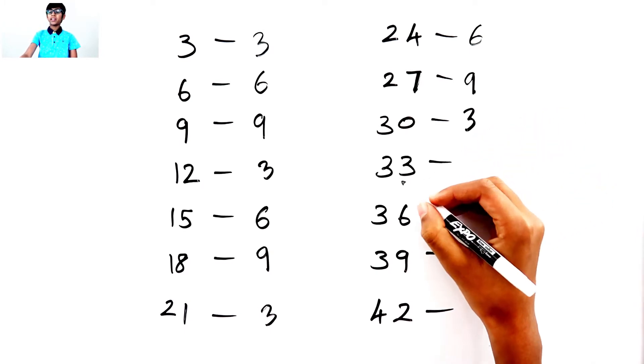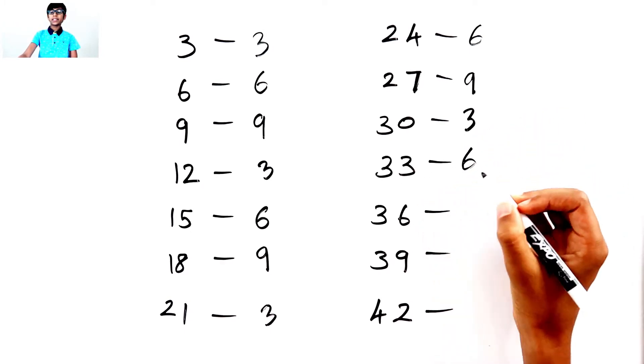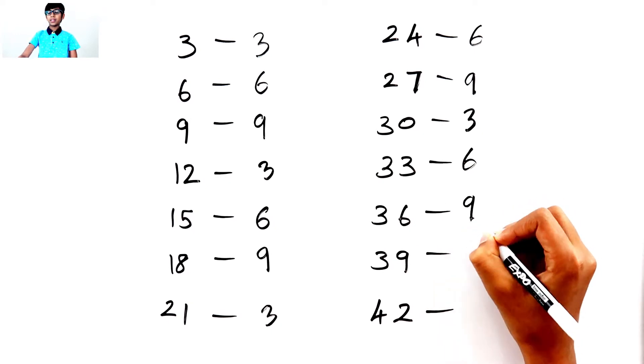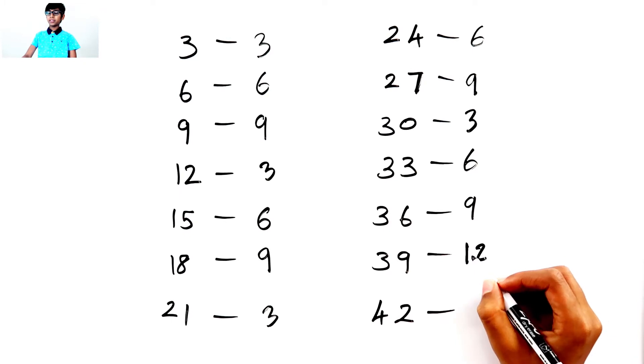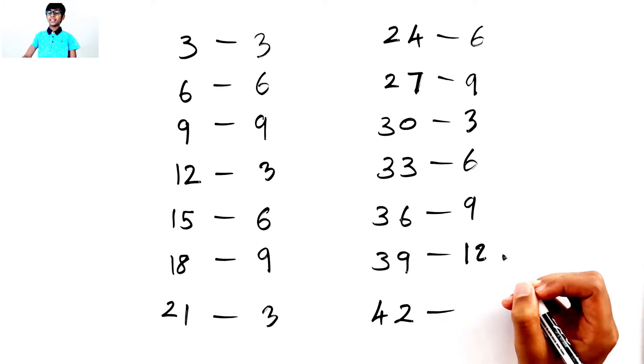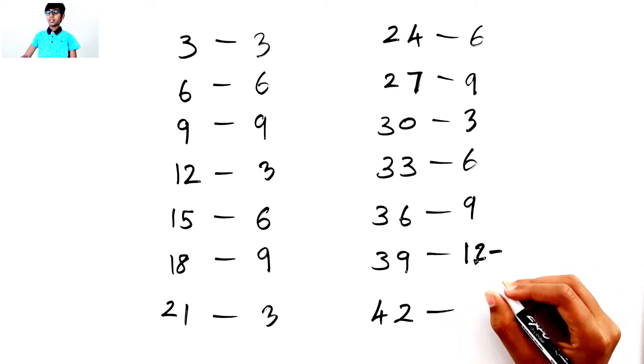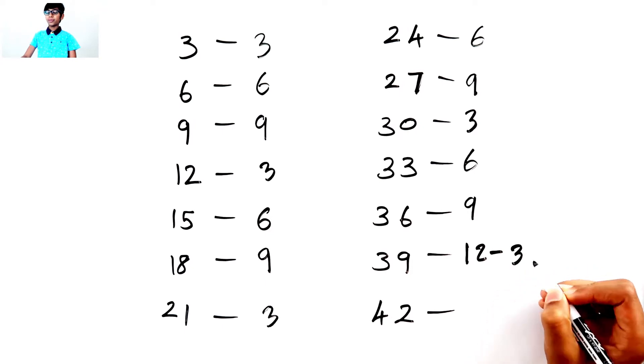3 plus 0. 3. 3 plus 3. 6. 3 plus 6. 9. 3 plus 9. 12. So 12 is a two-digit number, so I need to add this again. So, 2 plus 1. 3. 4 plus 2. 6.